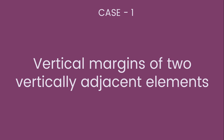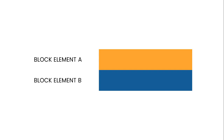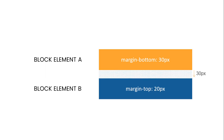Let's deal with Case 1 where vertical margins of two vertically adjacent elements are collapsed. We'll understand how it works and how it behaves when margins are applied to these two elements in the same direction. Here is a simple demonstration. We have a block-level element A and a block-level element B. For element A I have a margin-bottom of 30 pixels, and for element B I have a margin-top of 20 pixels. What do you think will be the final margin applied between these two elements? Can you guess based on the previous explanation? Let's see.